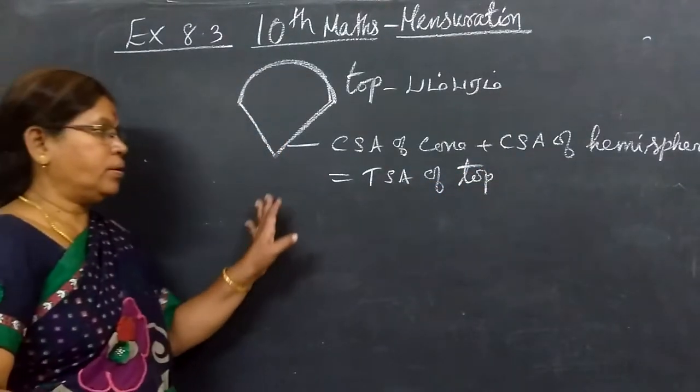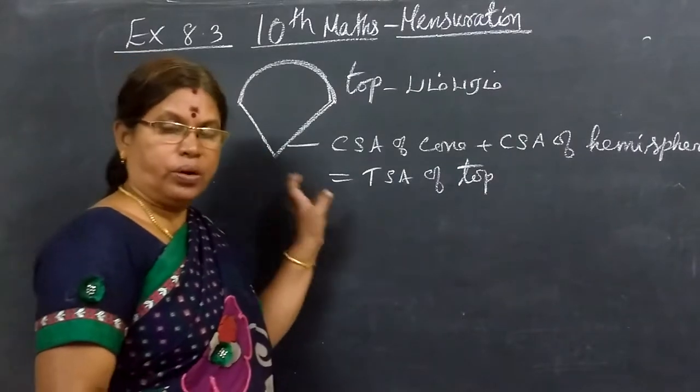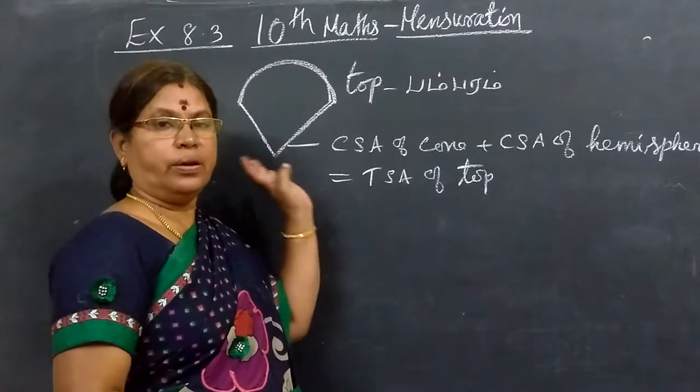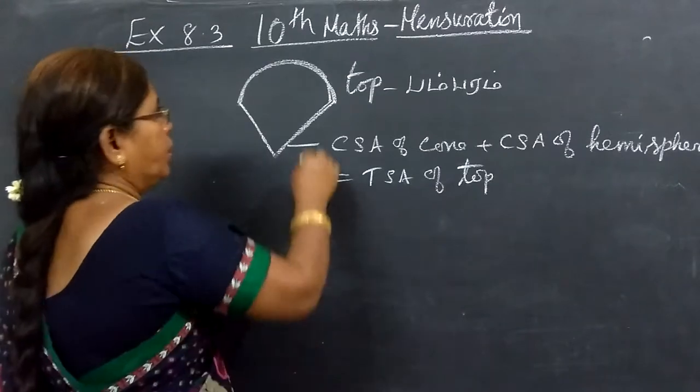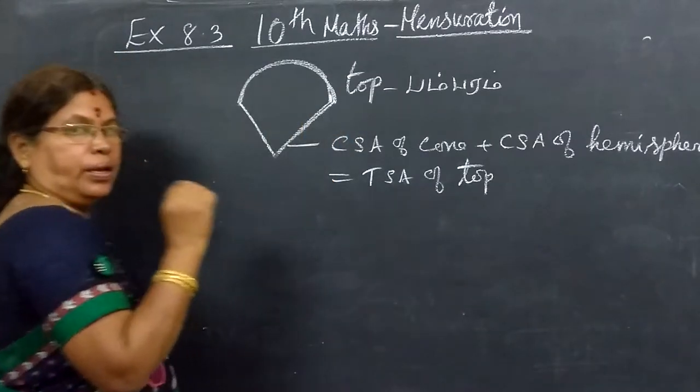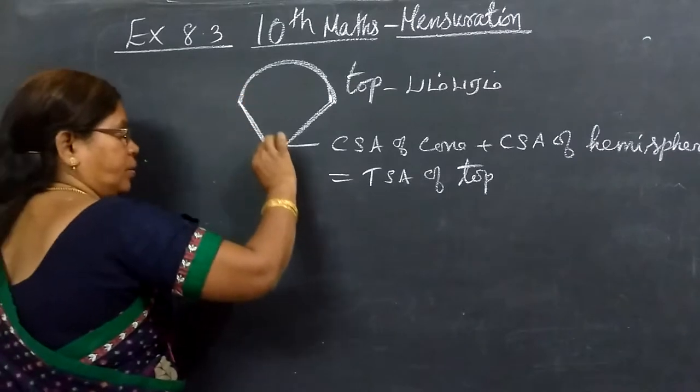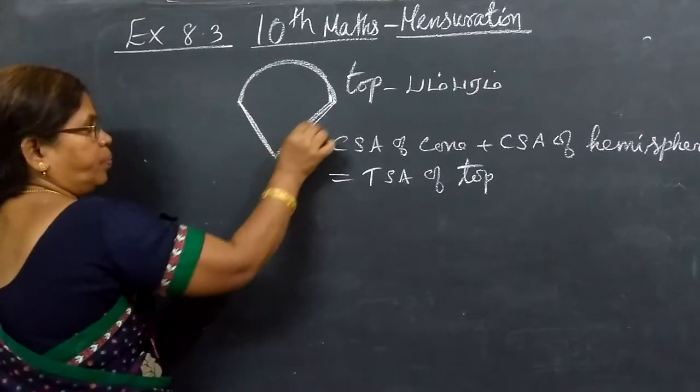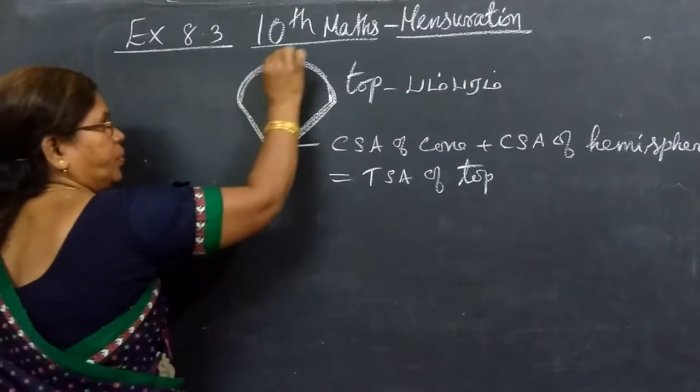It has asked why can't we use total surface area of cone and the total surface area of the hemisphere. Here it means only this outer part, not inner. This is the outer part.